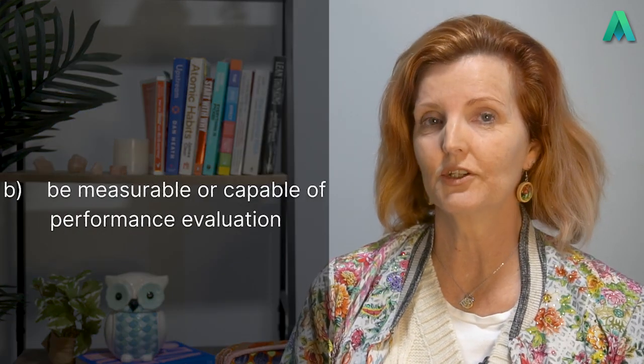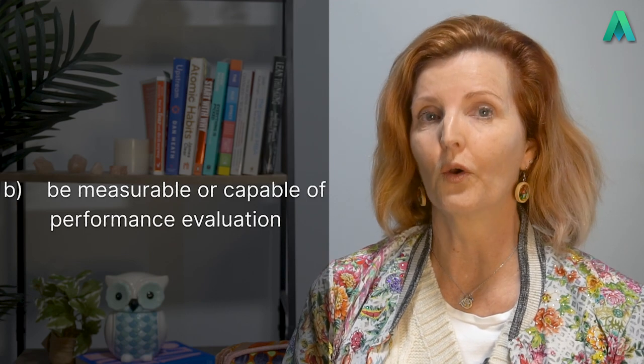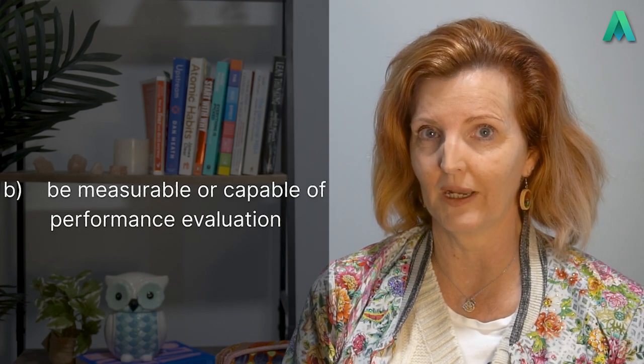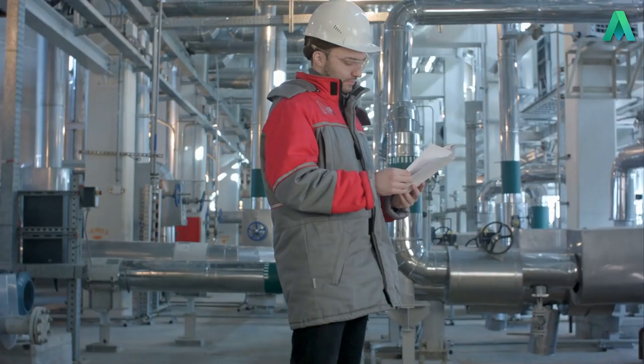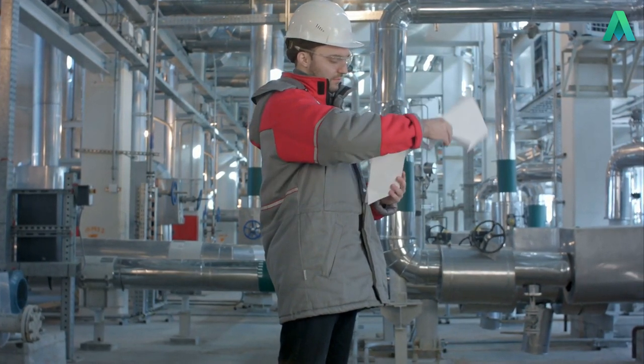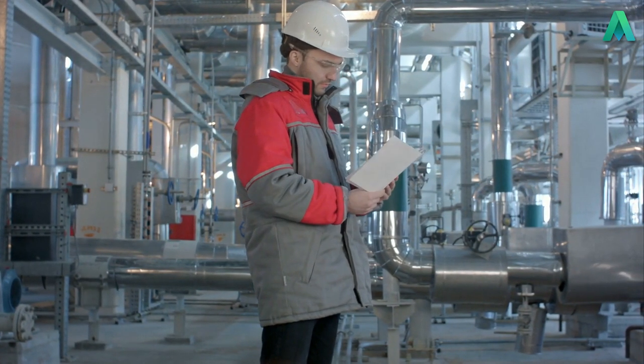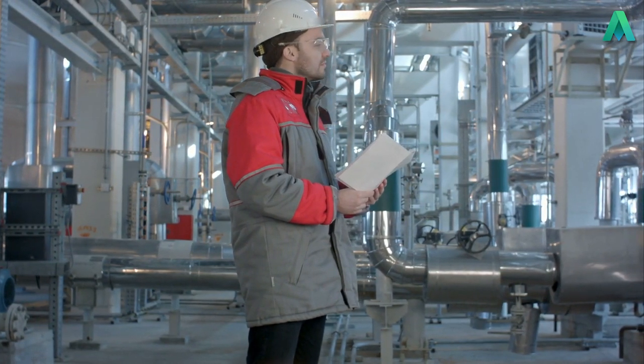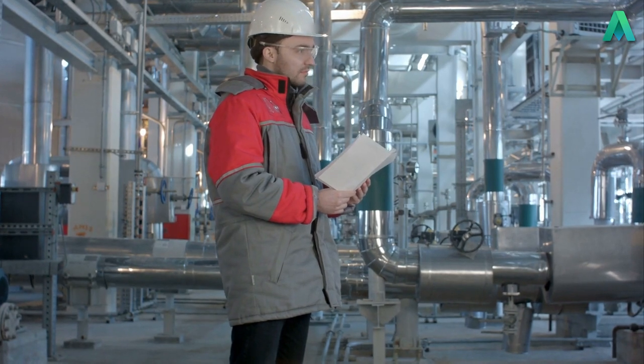Be sure to check out our video for clause 5.2 OH&S policy if you need a refresher. Point B states that the OH&S objectives are to be measurable or capable of performance evaluation. Of course, when objectives are set, you need to be able to measure them or evaluate the extent to which they are being achieved. It's no good setting an objective you're not able to monitor. Make sure you collect the data and can generate the reports needed to track how well you are going in achieving your objectives.